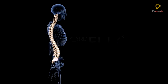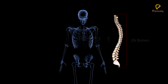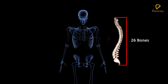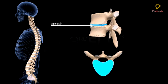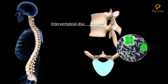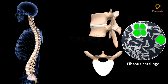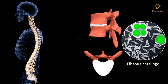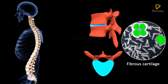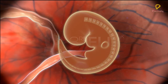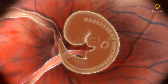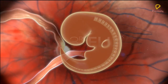In a human adult, it is made up of 26 serially arranged bones called vertebrae. The intervertebral discs, made up of fibrous cartilage, are present between the successive vertebrae, forming the cartilaginous joints. In the human embryo, there are 33 vertebrae, some of which fuse during the process of development.